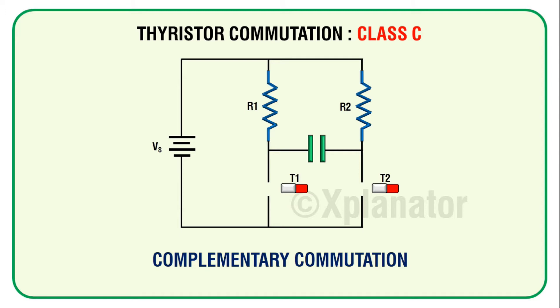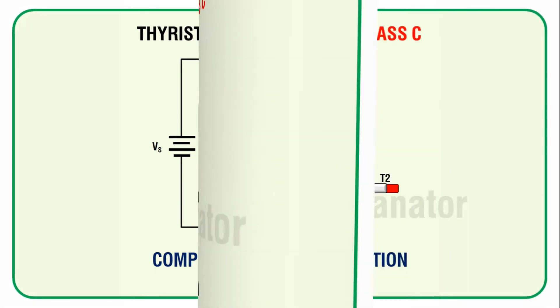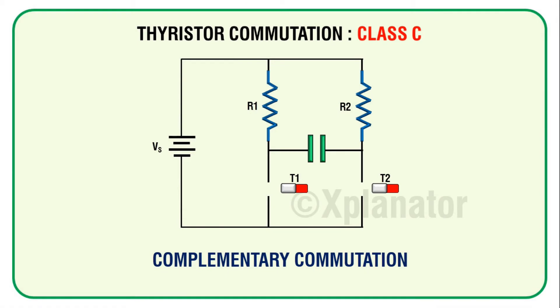A thyristor when it is switched off acts as an open switch and when switched on acts as a closed switch. In the initial state, let's assume that the circuit is off, none of the thyristors are conducting, and the capacitor is not charged as well.